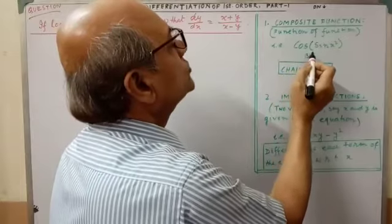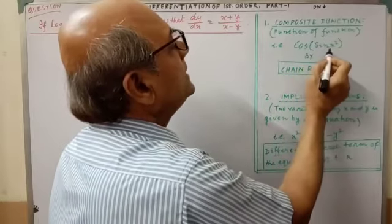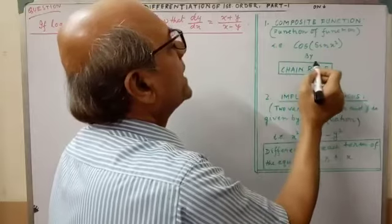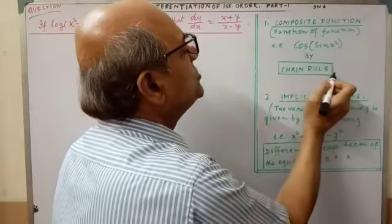Example, cos into sin x square. How will you get the solution? By chain rule.